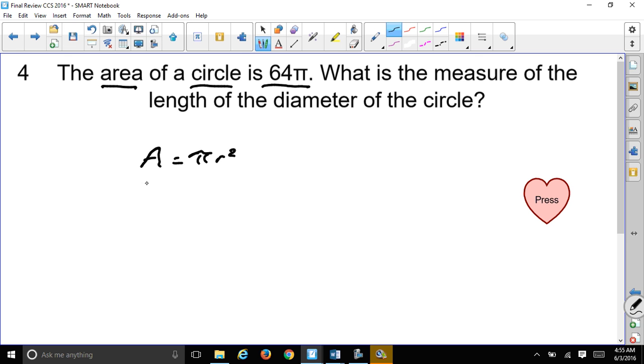So this time they already give you the area. They said that was 64π. And we are looking for the measurement of the diameter. We have 64π, which is the area, equals π times radius squared. Well, let's divide both sides by π so that way we can get rid of the π to cancel out. So if the π will cancel out, we have that gone from both sides, leaving us with just the radius squared.